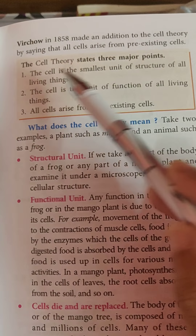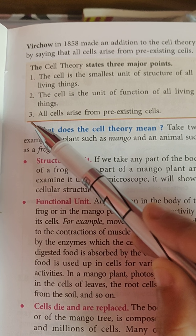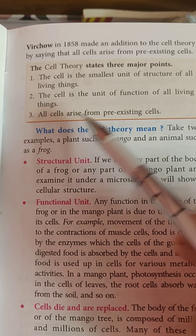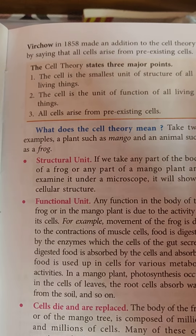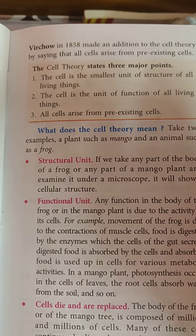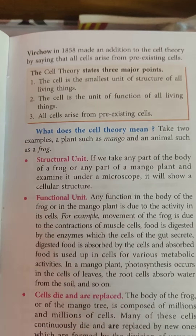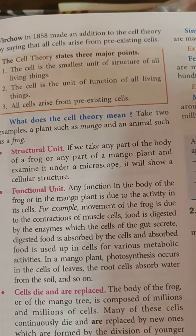When you are asked to write cell theory in an exam, this is what you are going to write. The cell theory states three major points: first, the cell is the smallest unit of structure of all living things; second, the cell is the unit of function of all living things; and third, all cells arise from pre-existing cells.